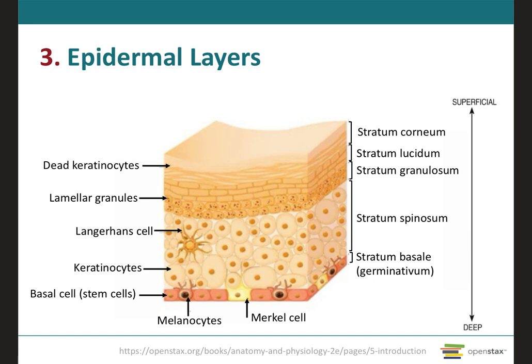Now let's talk about these different layers. First, we have the stratum basale, which is the deepest layer of the epidermis. It is composed of a single row of cuboidal, which are squared, or columnar, which are rectangular keratinocytes, some of which are stem cells that will then undergo cell division to continually produce new keratinocytes.